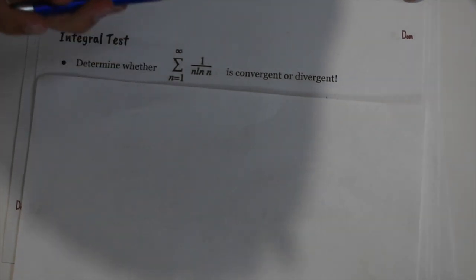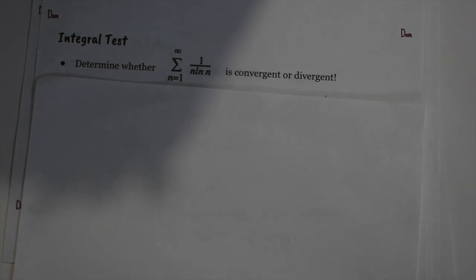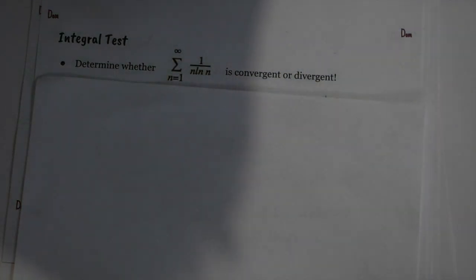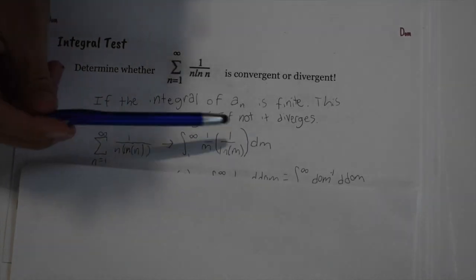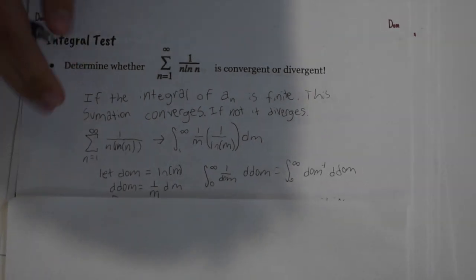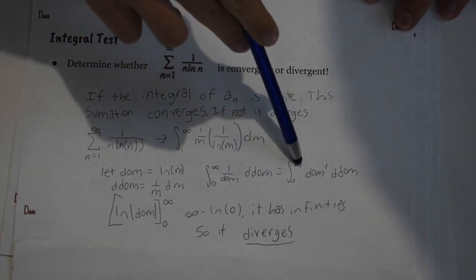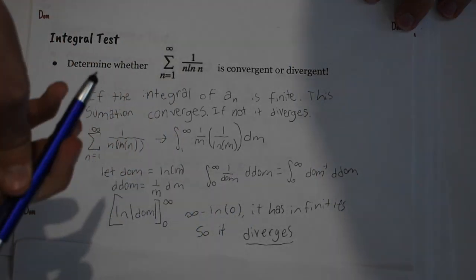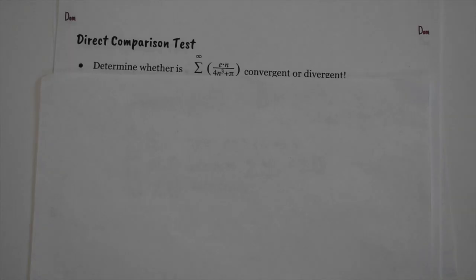The integral test converts the summation into an integral to estimate the sum. If the integral is infinity it diverges; if it's a finite number it converges. A common mistake is saying the integral value equals the sum — it's only an estimate. We convert to the integral of 1/(m · ln m) dm, do a u-substitution, and get ln(ln m) evaluated from 1 to infinity, which goes to infinity. Therefore it diverges.